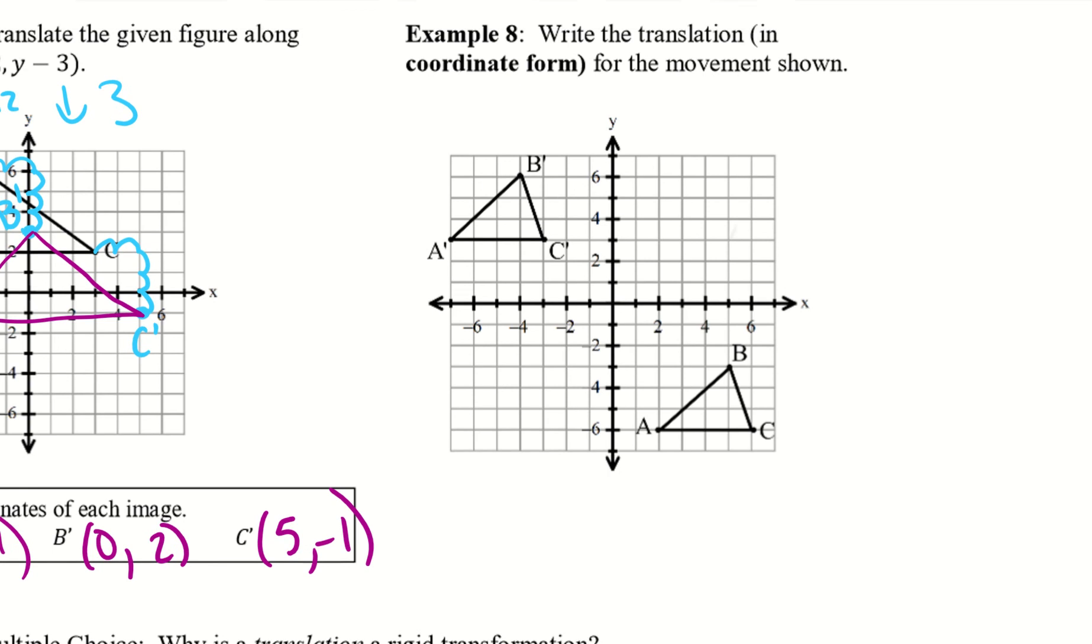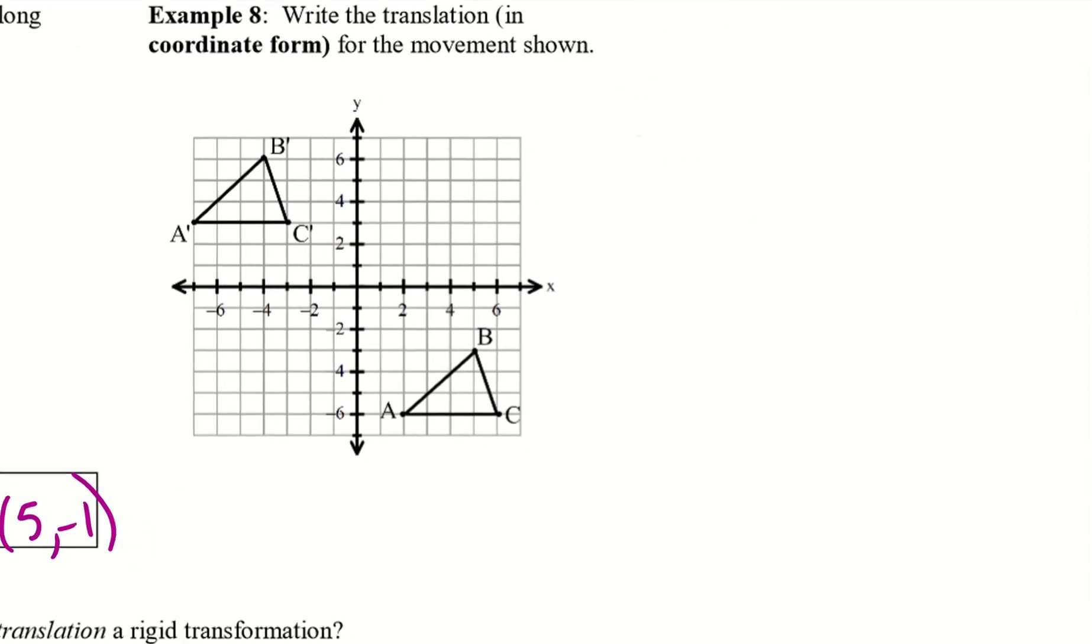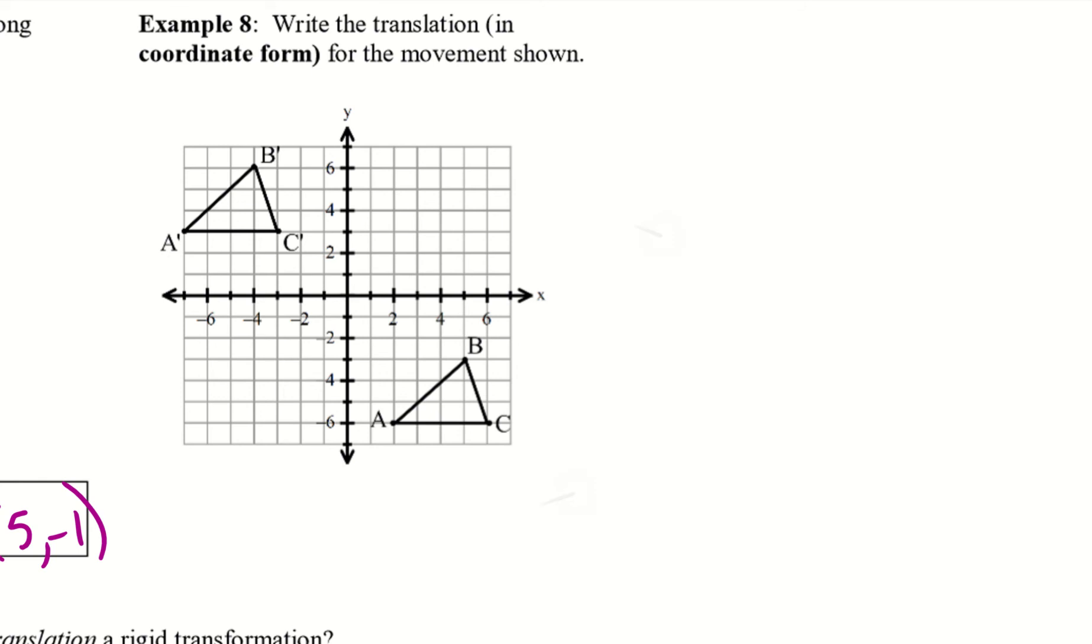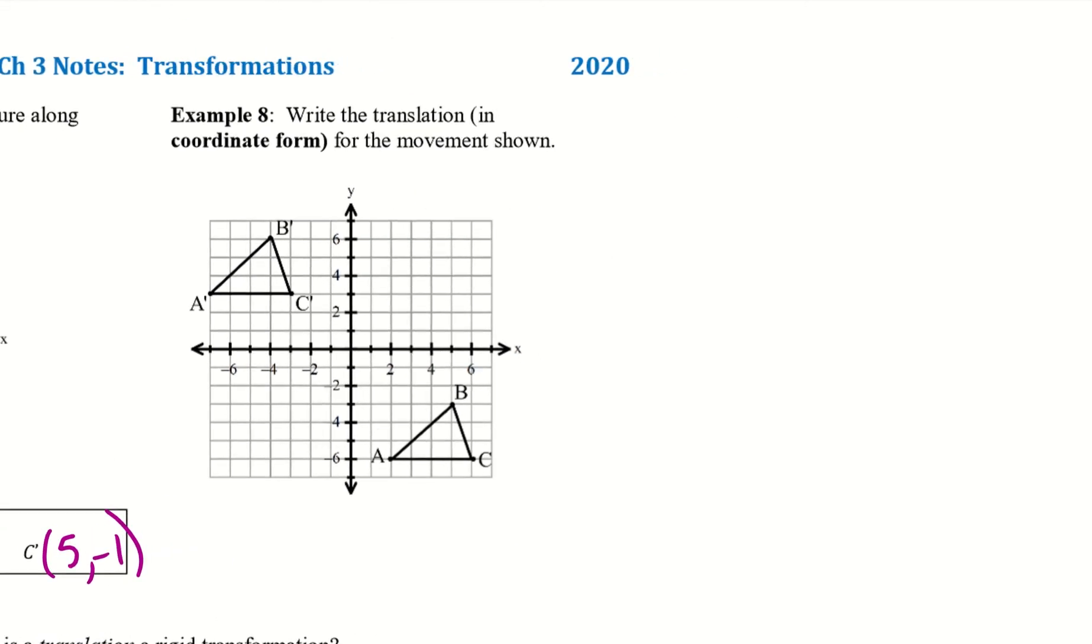Alright, I want you guys to go ahead and try example 8. So I'll give you a second to try it, and then when you... Oh, this one is different. I thought it was the same. So I'll go ahead and we'll do example 8 together. So write the translation in coordinate form from the movement shown. So this time we're writing it in coordinate form instead of vector form. Once again, we can choose any point. Let's go ahead and do B. I don't think I've done B yet. But once again, it doesn't matter. And let's make sure to start with our pre-image and not our image.